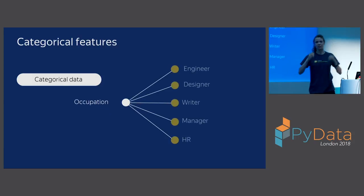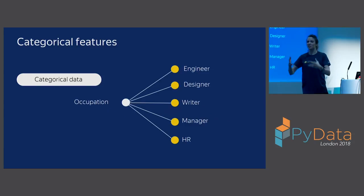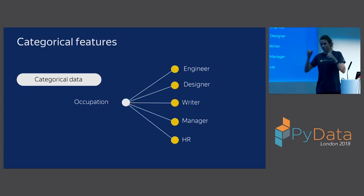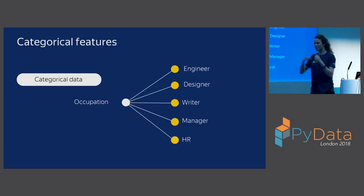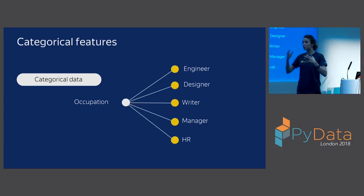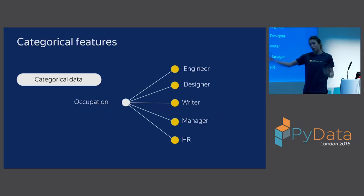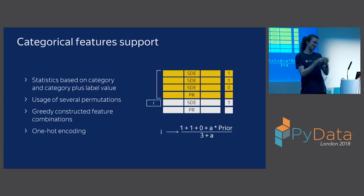But there is also another type of data called categorical data. A categorical feature has a discrete set of values that are not necessarily comparable with each other by less or greater. These features can have a small number of values, like occupation, or a large number of values, like user ID. The existing libraries either do not work with categorical features at all, like XGBoost, or work with them in a suboptimal way. That is why CatBoost — which stands for categorical boosting — was built to handle categorical features well.